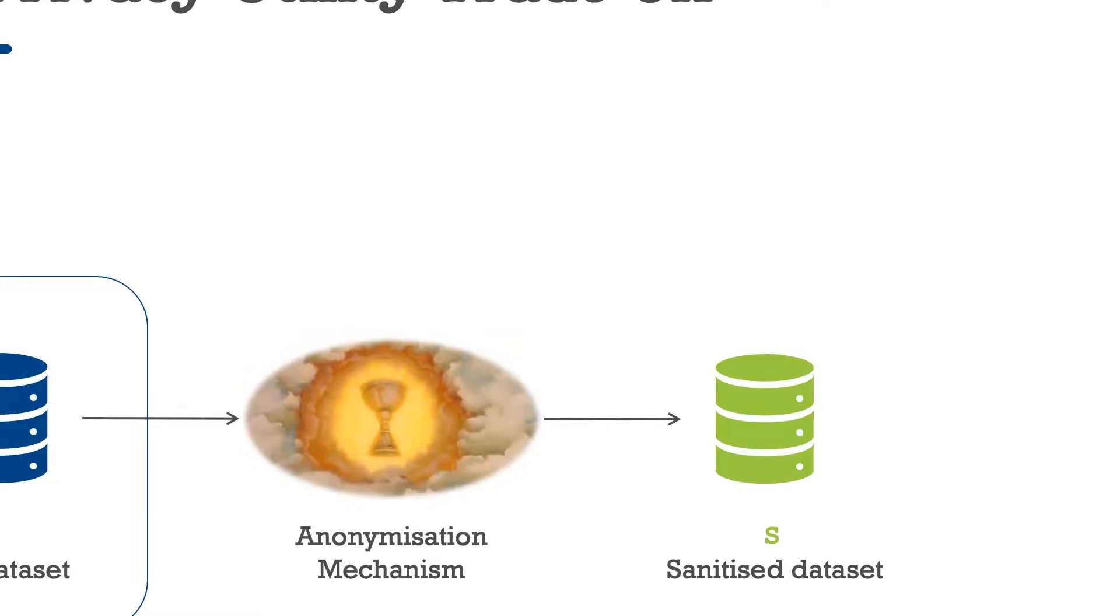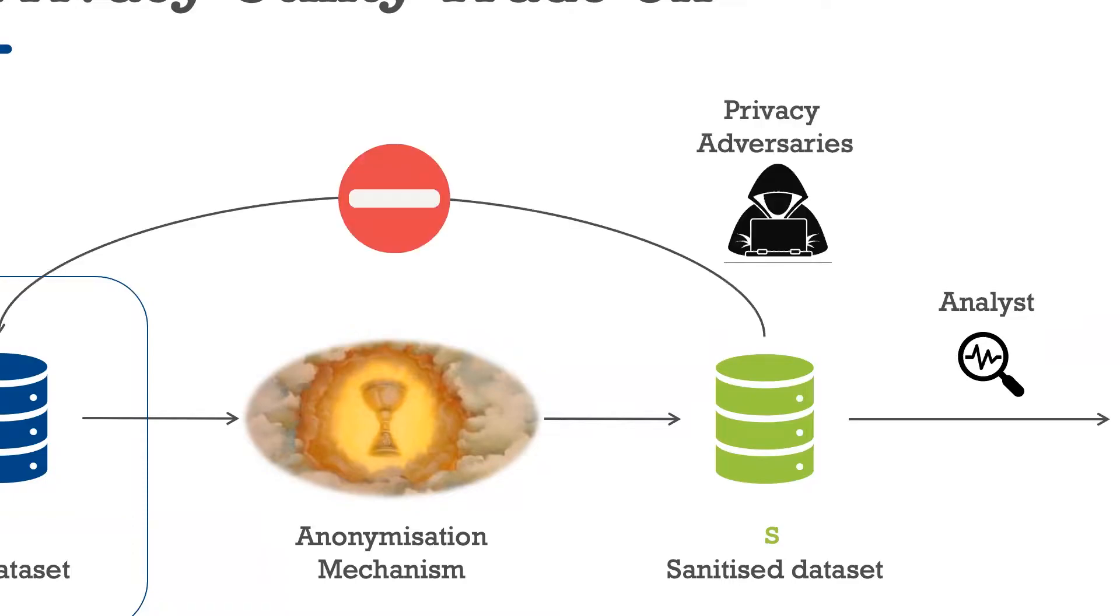I'm sure most of you will be familiar with the basic dilemma of privacy-preserving data publishing where we want to find an anonymization mechanism that takes a raw data set that contains some sensitive information and generates a sanitized version of this data that we can share, which on the one hand retains the utility of the data for statistical analysis, but on the other hand prevents the leakage of sensitive information about individuals like the things that we were concerned about and the reason why we decided to use an anonymization mechanism in the first place.